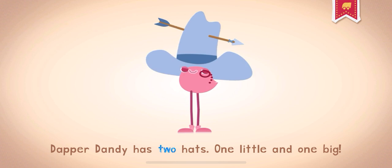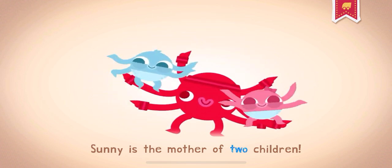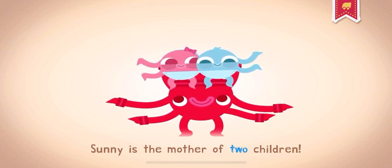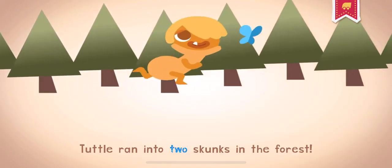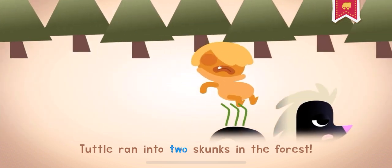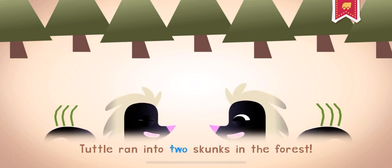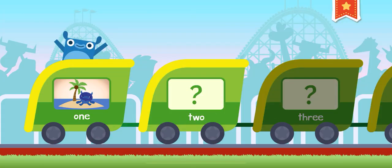Dapper Dandy has two hats, one little and one big. Two. Sunny is the mother of two children. Two. Tuttle ran into two skunks in the forest. Pee-yew! Two. When it comes to cookies, two is better than one.